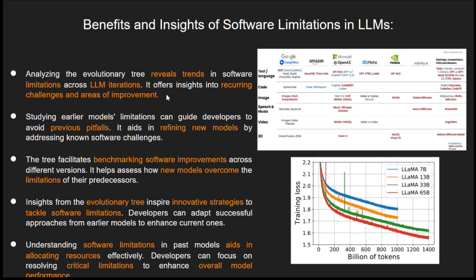Speaking of improvements, let's talk about how knowing the limitations of other models can help us build better ones. By checking out these limitations, developers can dodge pitfalls and craft better variants. Plus, this trove of data helps us understand how newer models are doing in comparison to their predecessors. The insights from the limitations can be like a roadmap — where we try to solve future software challenges, it's like learning from the past to make the future even better.